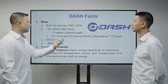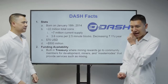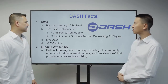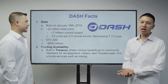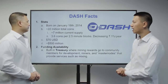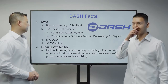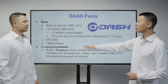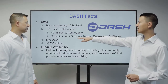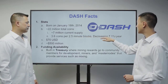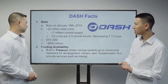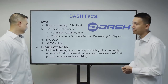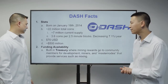Some Dash facts: the project was started in January 2014. The total supply will be 22 million coins, with about 7 million Dash currently circulating. Block rewards are 3.6 coins every two and a half minutes, decreasing 7% per year. It's currently trading at around $70 with a half a billion dollars in market value.